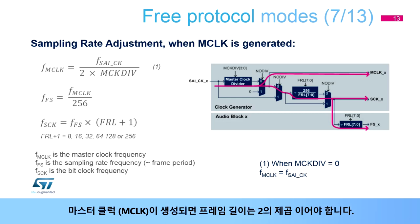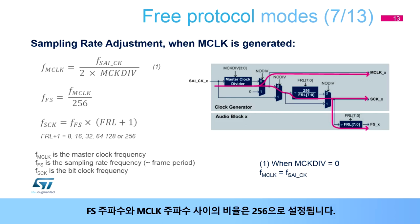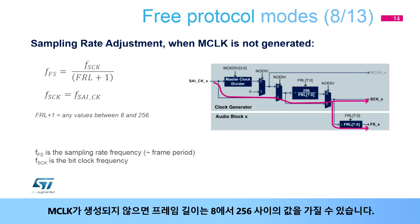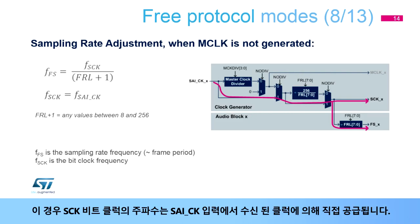When the master clock, or MCLK, is generated, the frame length must be a power of 2, and the ratio between the FS frequency and the MCLK frequency is set to 256. The clock SAI-CK is provided by the STM32F7's RCC block. When the MCLK is not generated, the frame length can take any value from 8 to 256. In this case, the frequency of the SAI bit clock is directly given by the clock received on the SAI-CK input.